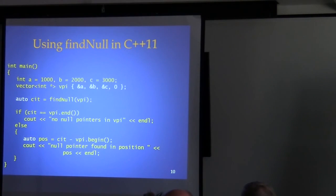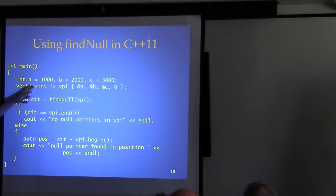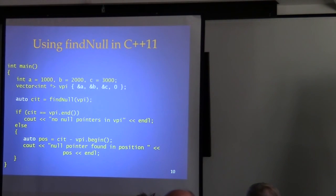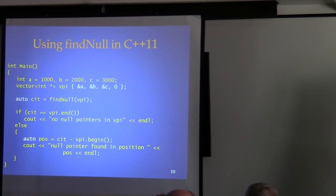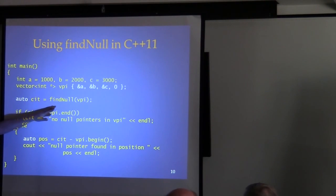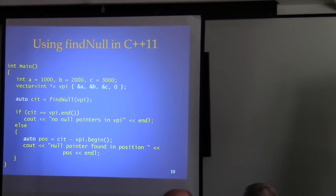Now here's what the user code looks like in C++11. First, brace initialization for vectors — now I can just do that intuitively. The auto keyword: we know what type find_null returns, and the compiler has to know it too. Since C++ requires a function to be declared before use, if the compiler already knows the return type, why do we have to write it out? So 'auto cit = find_null(v)' — cit is whatever find_null returns.